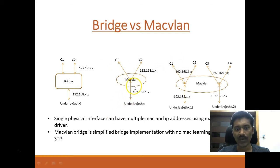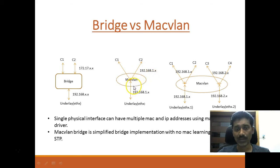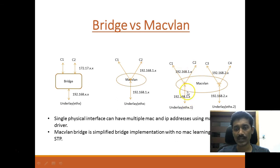With the MacVLAN driver, we can have containers in the same physical subnet as the underlay network. Here we see the underlay network in the 192.168.1 network and the containers can be in the same network. With the MacVLAN driver, a single physical interface can have multiple MAC and IP addresses. Here we have two sub-interfaces in the underlay physical network, and two containers which are part of the first sub-interface are in the .1.x IP address range, while the other two containers are in the .2.x subnet, part of the second sub-interface.